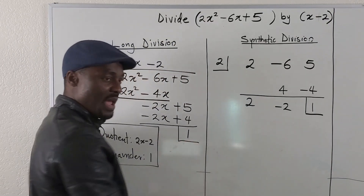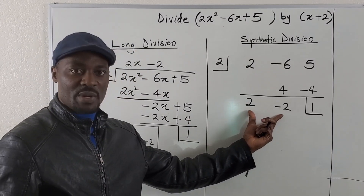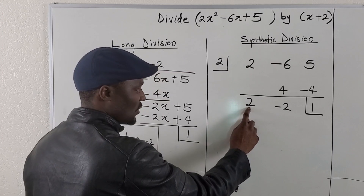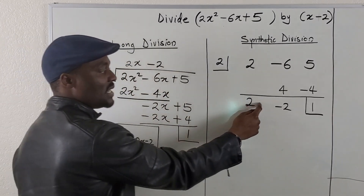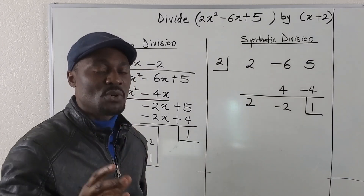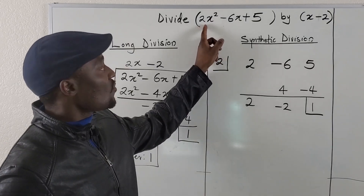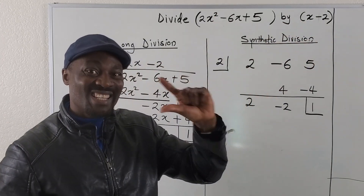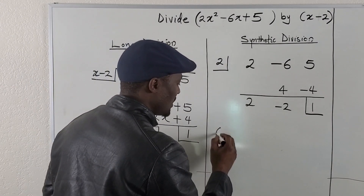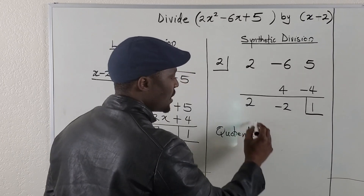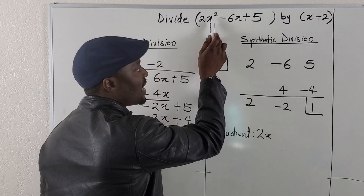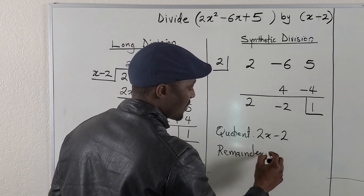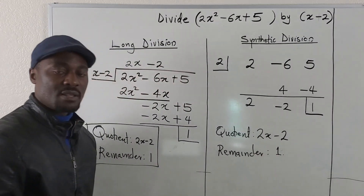Looks like we got the same remainder! The answer is always here on the bottom line. Now, how would you know what these terms are? If you look at this 2 and this negative 2, they look like just numbers. But this one needs an x — we should write not x cubed or x squared, because we're dividing a quadratic polynomial by a linear polynomial. When you divide x squared by x, the answer you get is x. That's why this is x. So your quotient will be 2x minus 2, and your remainder will be 1. That's how you go about synthetic division.